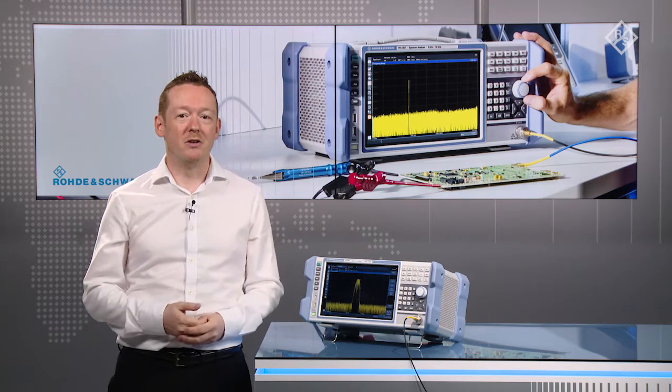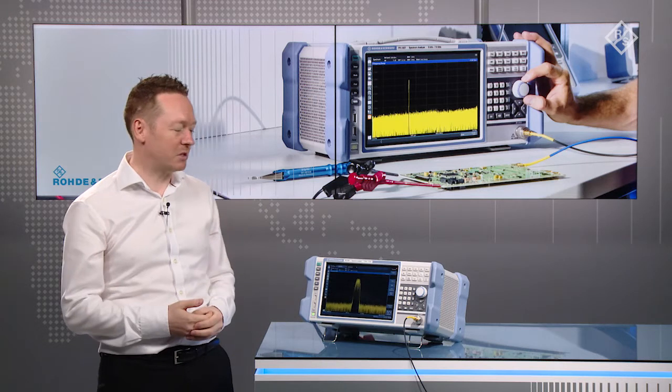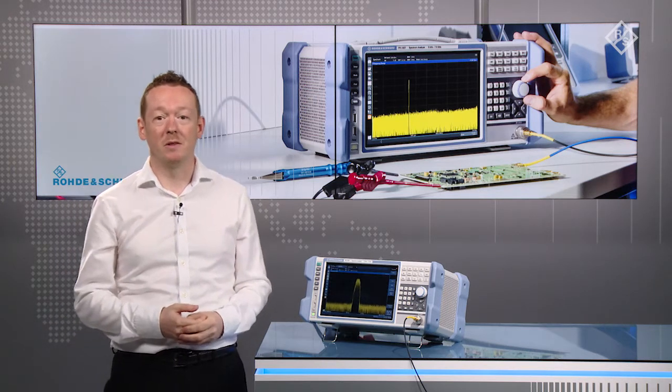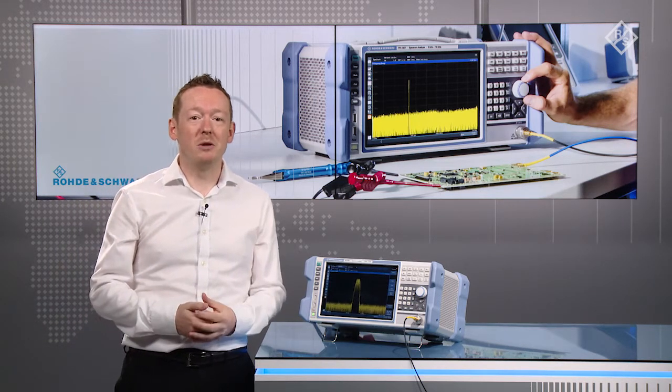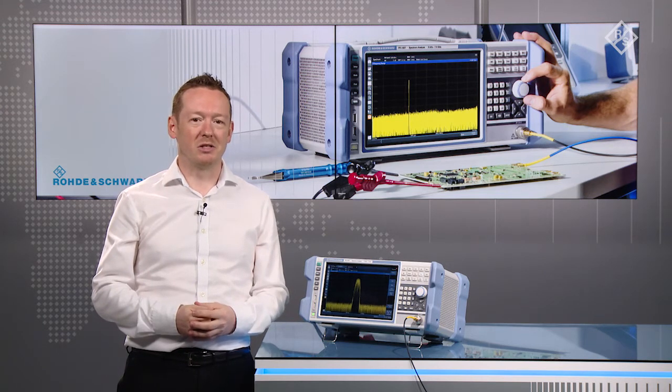Pinch to zoom and pan are natural gestures to any mobile phone user and this is implemented seamlessly on the FPL-1000. This allows the user to select frequency and amplitude quickly and directly to locate the signal of interest in the spectrum.